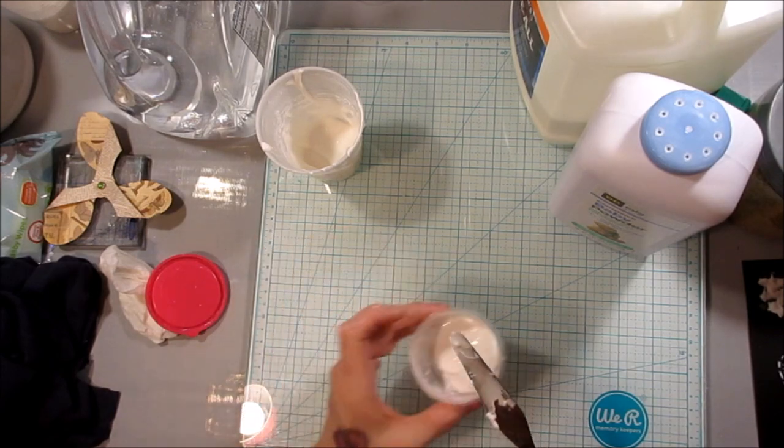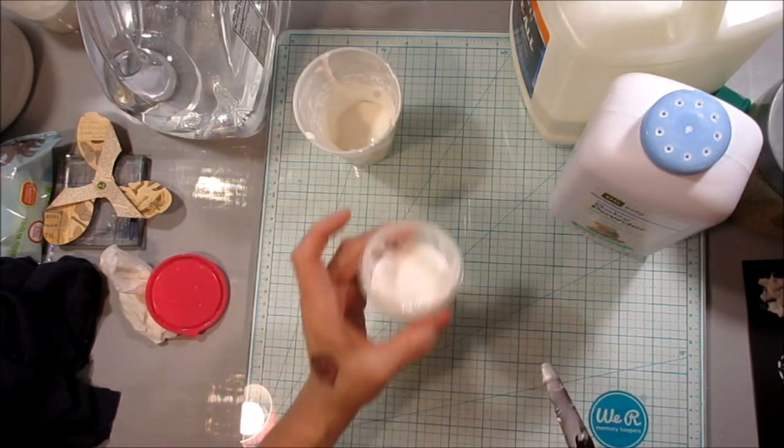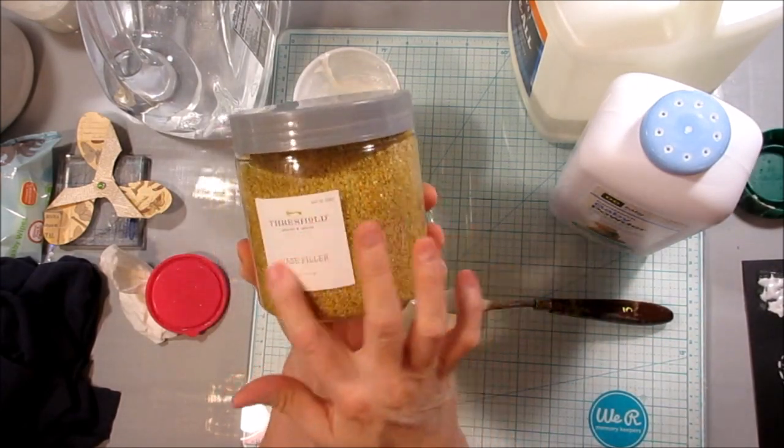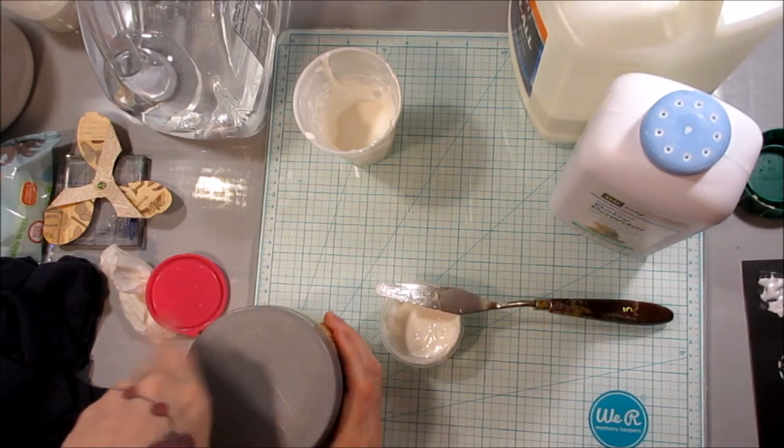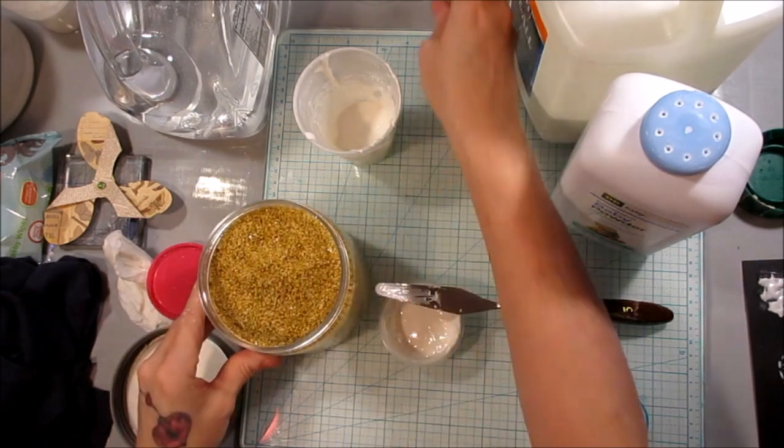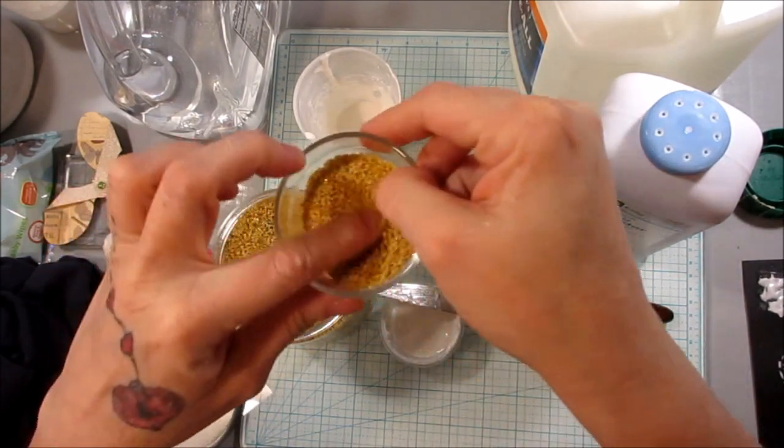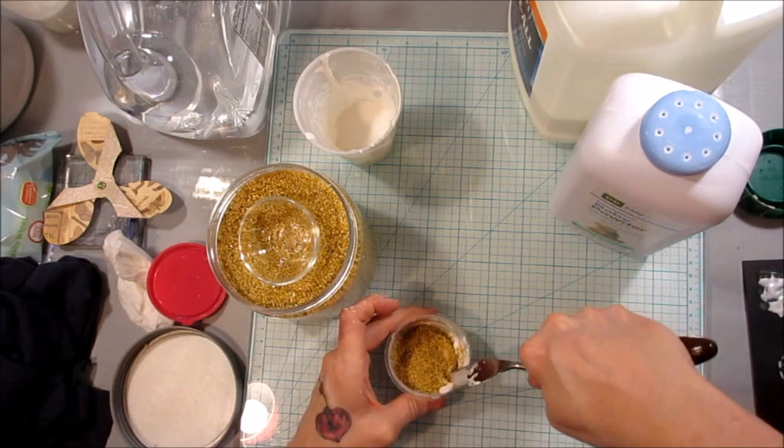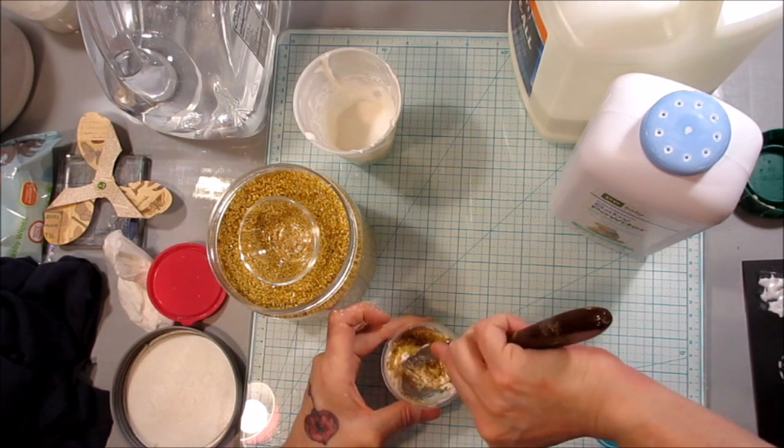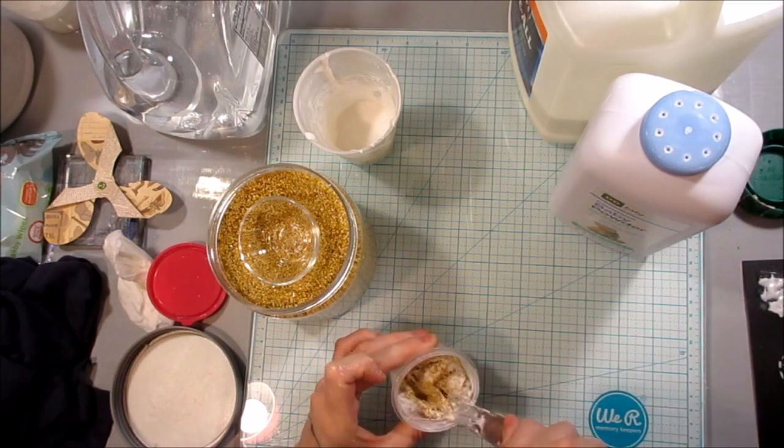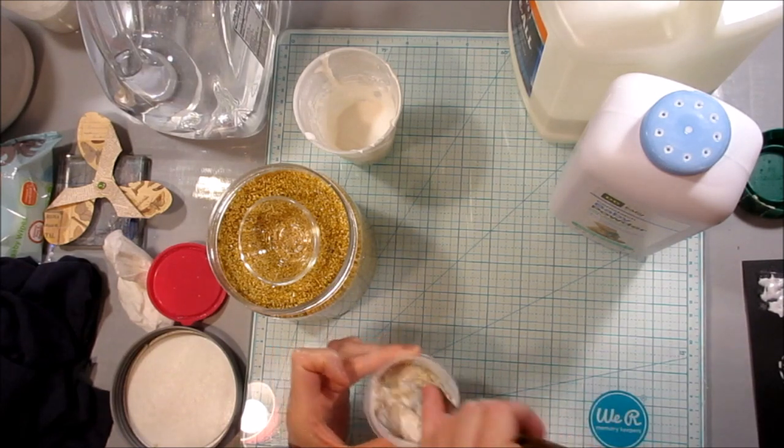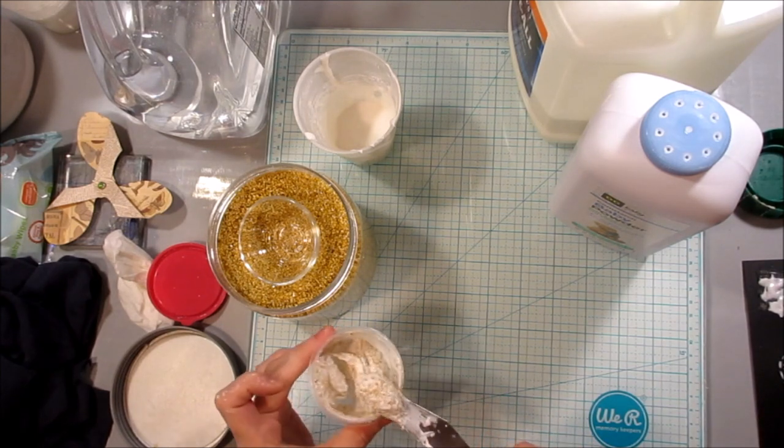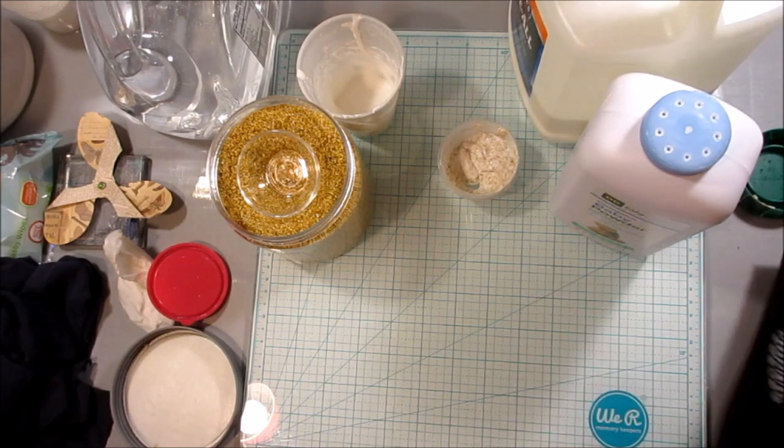Now, at this point, also, if you wanted to take some and section it off, like I have some in here and then I have some in here, you can add things to it. Like, for example, I have this coarse sand. It's a vase filler stuff that I got from Target a long time ago. So now, you could take some of this, even though this isn't sand, you could take sand or this. This is kind of a little bit coarser. The granules are bigger. And you can add this in and mix it into the paste and make your own type of texture paste with it, which is pretty cool.